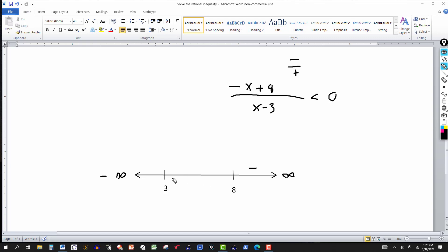Now let's pick a number somewhere between 3 and 8. It doesn't matter as long as it's between 3 and 8. You can pick 4, 4.2, whatever you want as long as it falls between 3 and 8. So let's pick 7. We're going to put 7 here: minus 7 and 8, that's a positive. 7 minus 3, that's a positive. Positive divided by positive is a positive, so put a positive there.